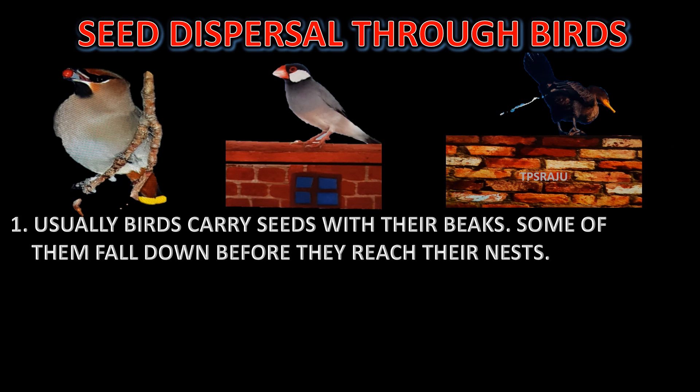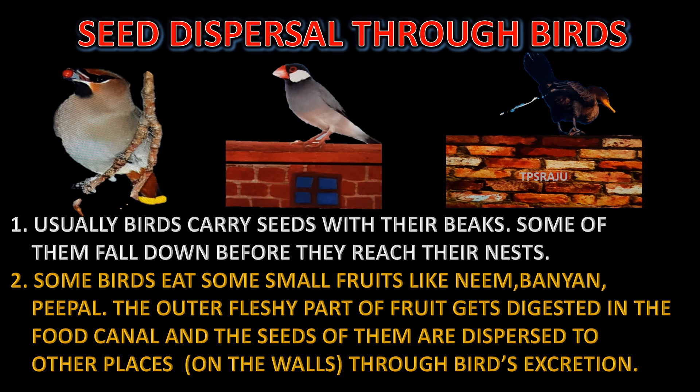Seed dispersal through birds. Usually birds carry seeds with their beaks, and some of them fall down before they reach their nests. Some birds eat small fruits like neem, banyan, peeple, etc. The outer fleshy part of the fruit gets digested in the gut and the seeds are dispersed to other places through the birds' excretion. That's why we often see plants growing on walls.